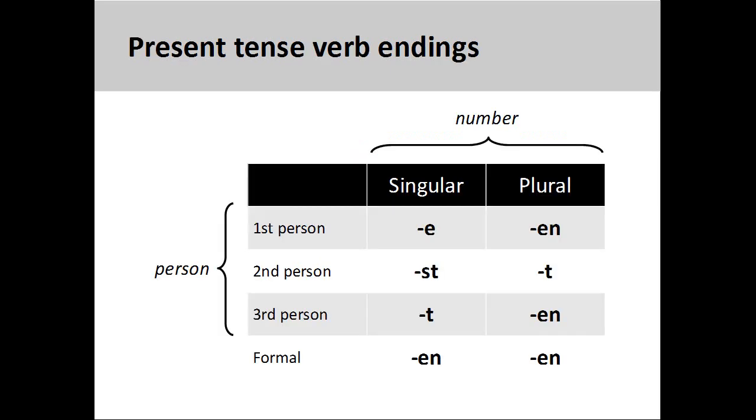In German, present tense verb endings are determined both by the number of the subject they modify—singular or plural—and the person of the subject: first, second, or third person. There are also singular and plural endings for the formal form of address.